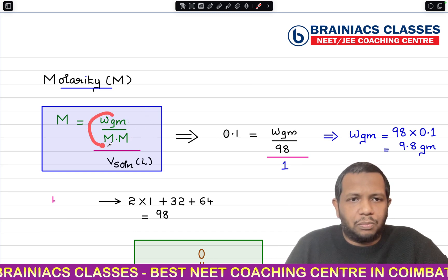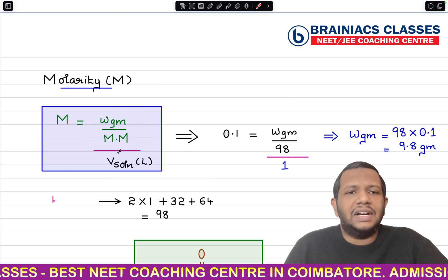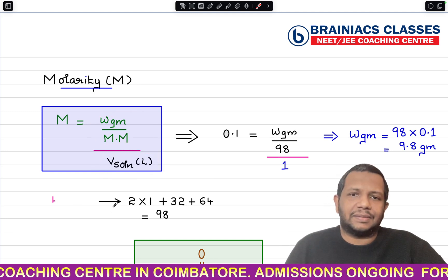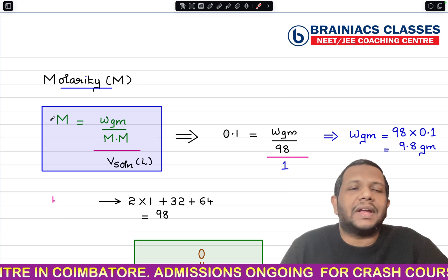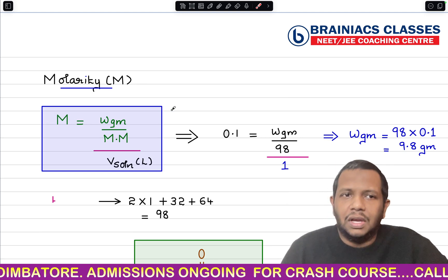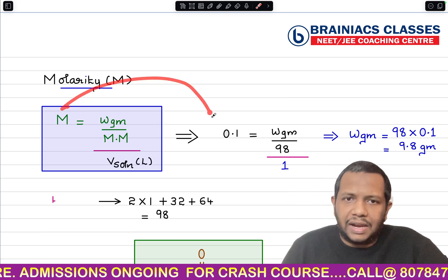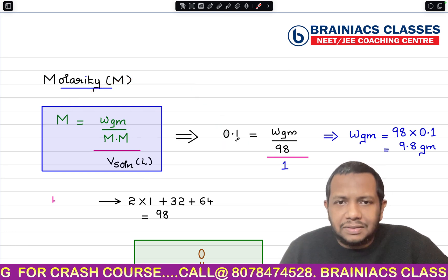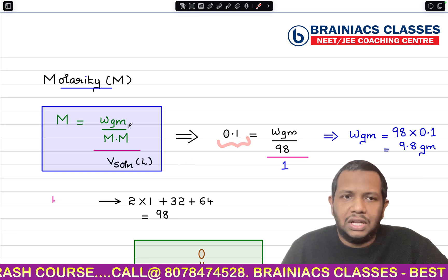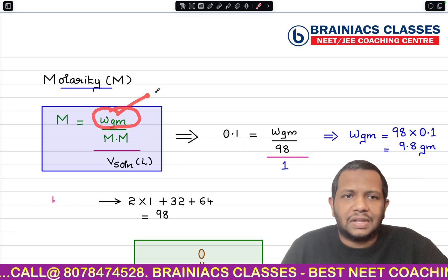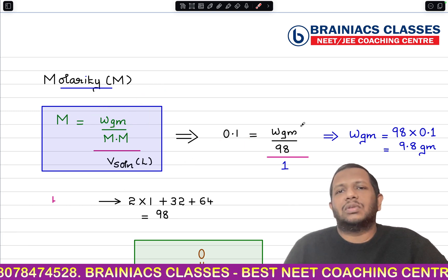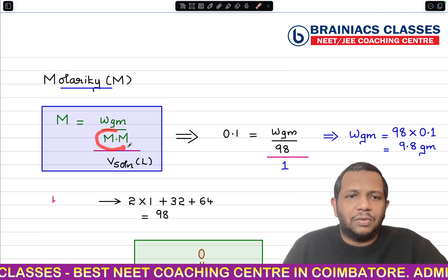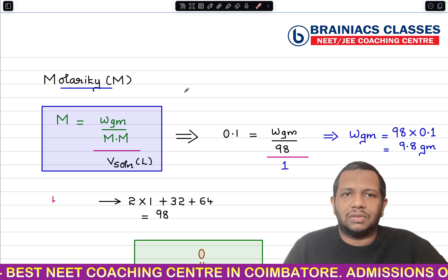In this question, they are preparing a 0.1 molar solution, so molarity = 0.1. We need to find how many grams of sulfuric acid are required, so weight in grams is the unknown. The molar mass of the solute — sulfuric acid (H₂SO₄) — needs to be identified, since the solute here is sulfuric acid dissolved in water.